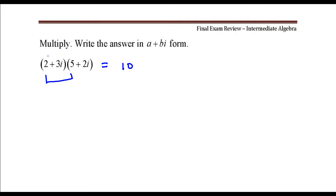Multiply the outer two, that's 4i. Multiply the inner two, that's plus 15i.